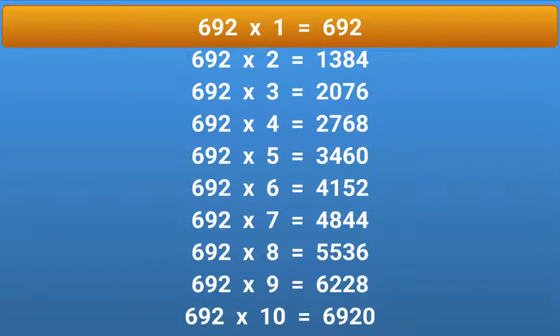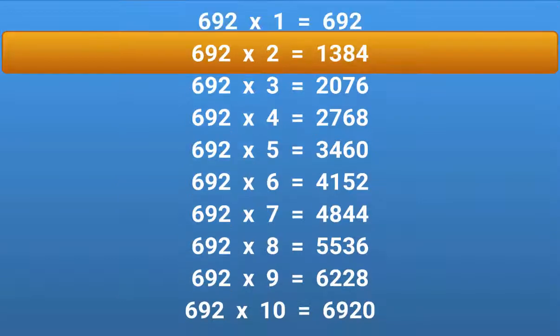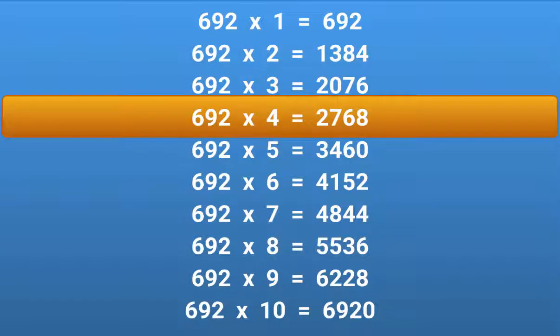692 × 1 = 692. 692 × 2 = 1384. 692 × 3 = 2076. 692 × 4 = 2768.